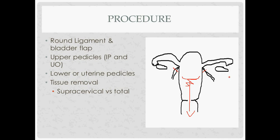Next, make the upper pedicles. Depending on whether you're taking the ovaries out or leaving them, you make pedicles either at the IP ligament or at the utero-ovarian ligament. If taking the ovaries out, find the IP ligament and confirm the ureter is not involved — visualize it peristalsing and confirm it's not grasped before making the pedicle.